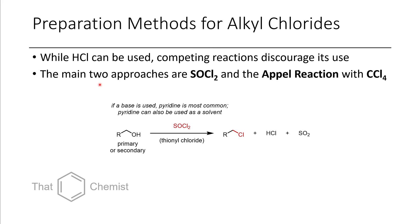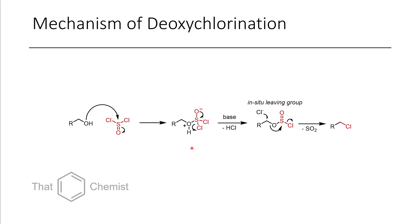The first approach is to use thionyl chloride. Another approach is the Appel reaction, which I'll show in a later scheme, but first let's look at thionyl chloride. In this reaction you have an alcohol, thionyl chloride, and usually a base such as pyridine. This results in the formation of an alkyl chloride, HCl, and sulfur dioxide. The HCl would usually be absorbed by the base, but if you heat to reflux without a base, you can usually get the reaction to go anyway, though the mechanism is slightly different.